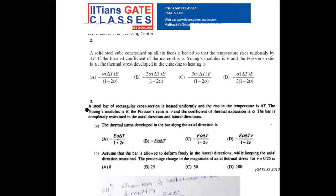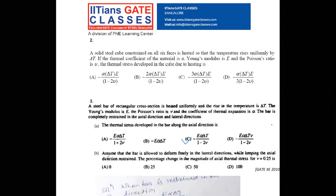Problem 3a: A steel bar of rectangular cross section is heated uniformly with temperature rise ΔT, Young's modulus E, Poisson's ratio nu, and thermal expansion coefficient alpha. The bar is completely restrained in the axial and lateral directions — all three directions constrained. So thermal stress in all three directions is the same: −E·alpha·ΔT / (1 − 2nu). The answer is C.